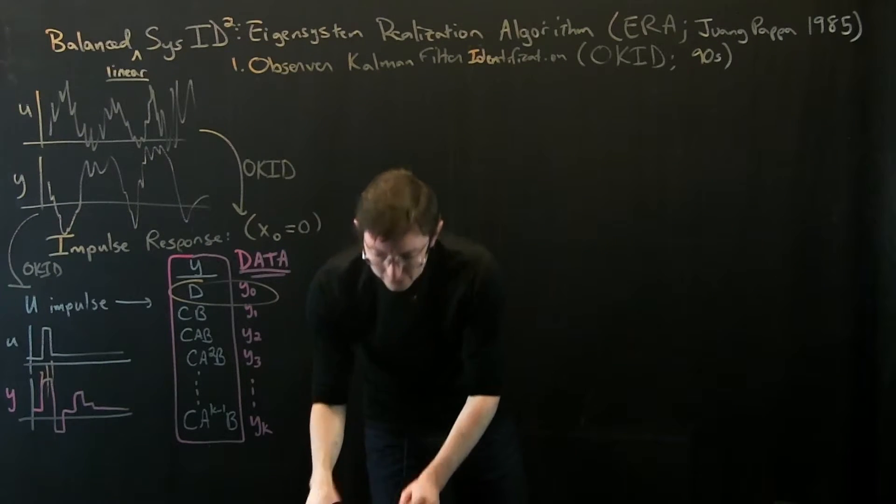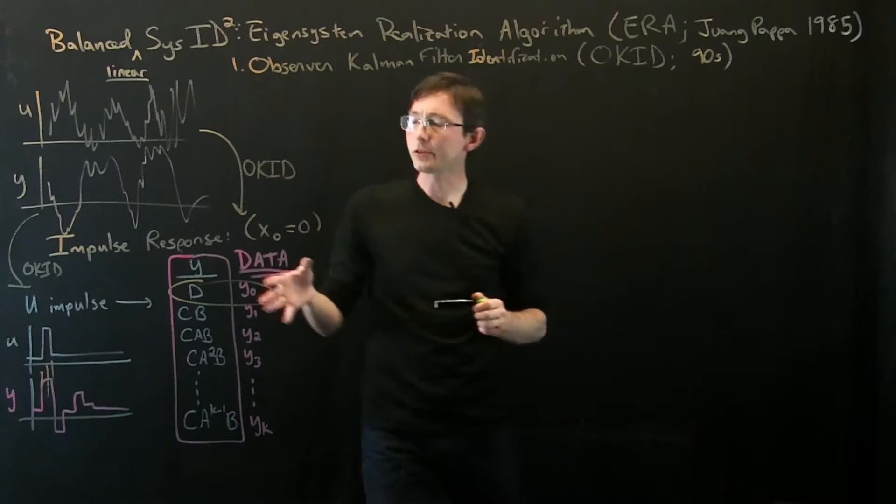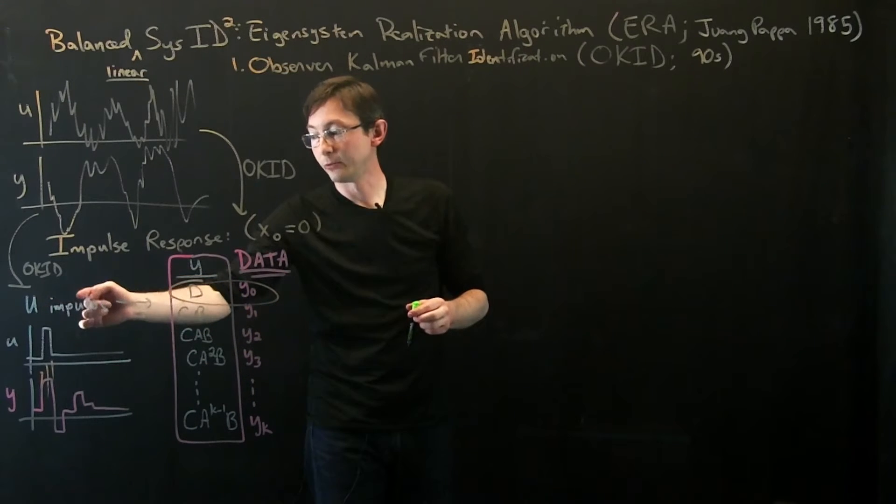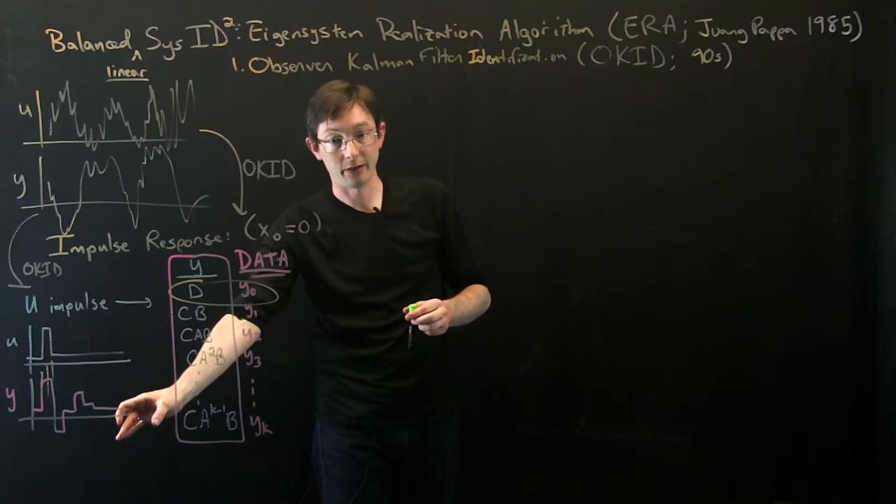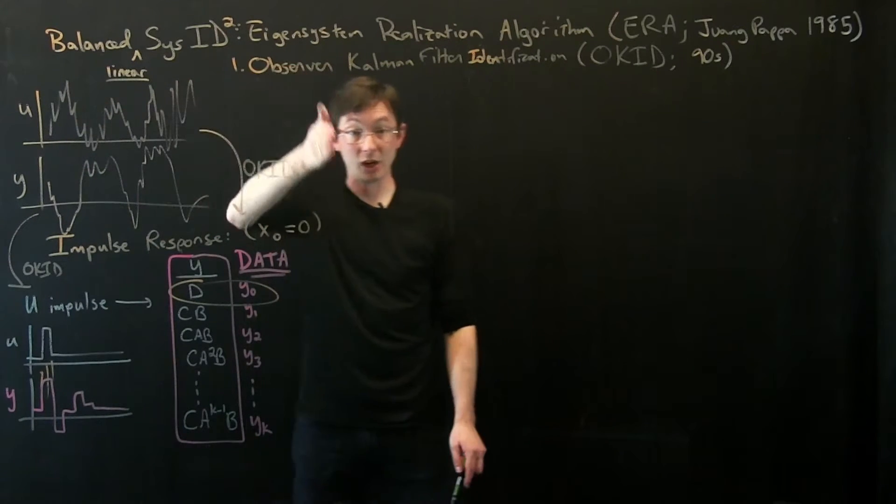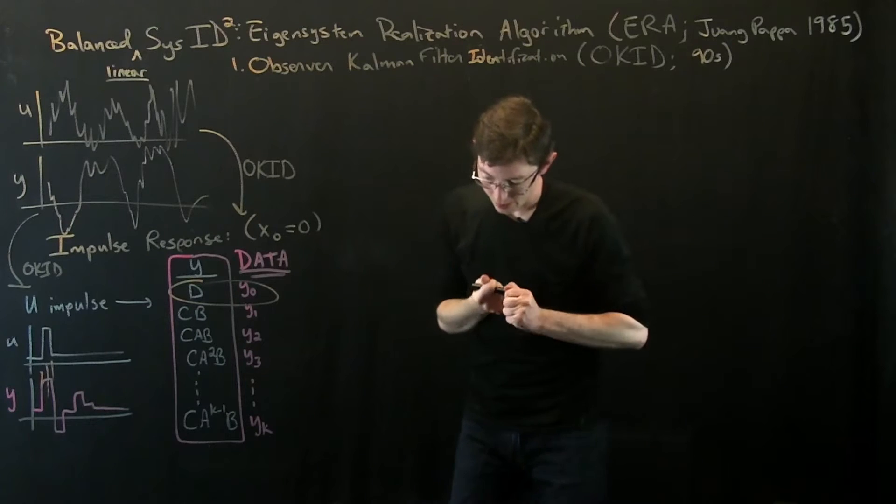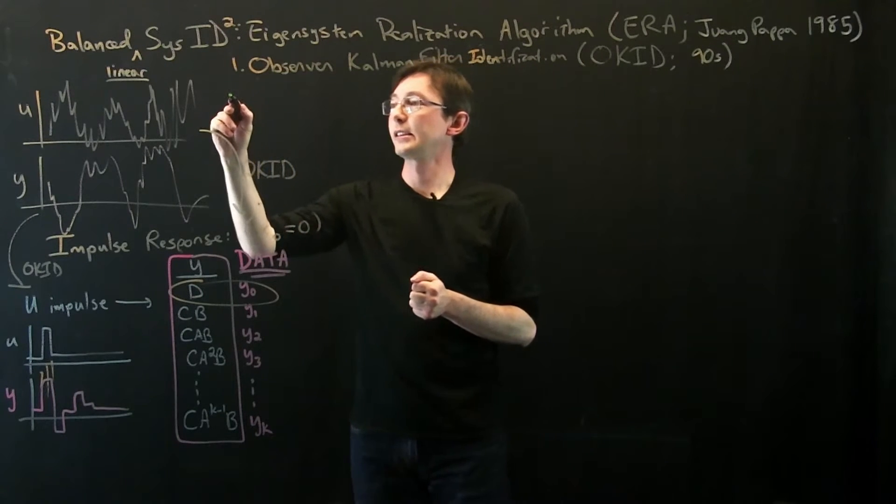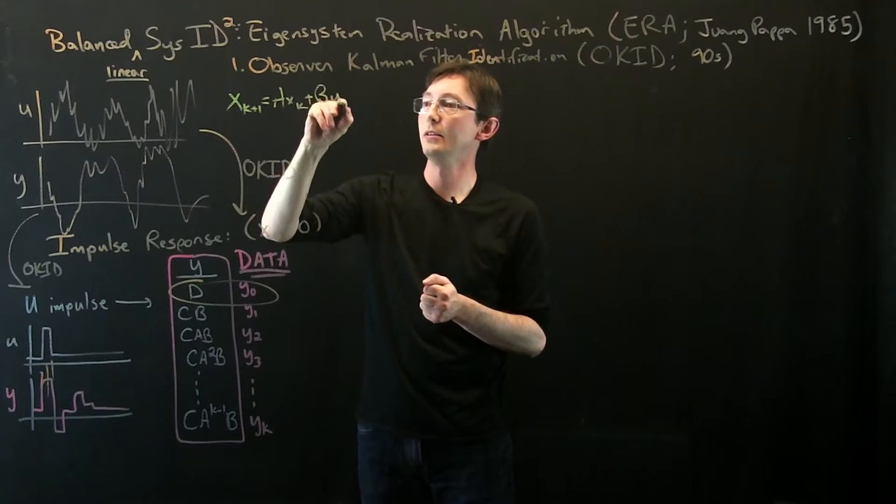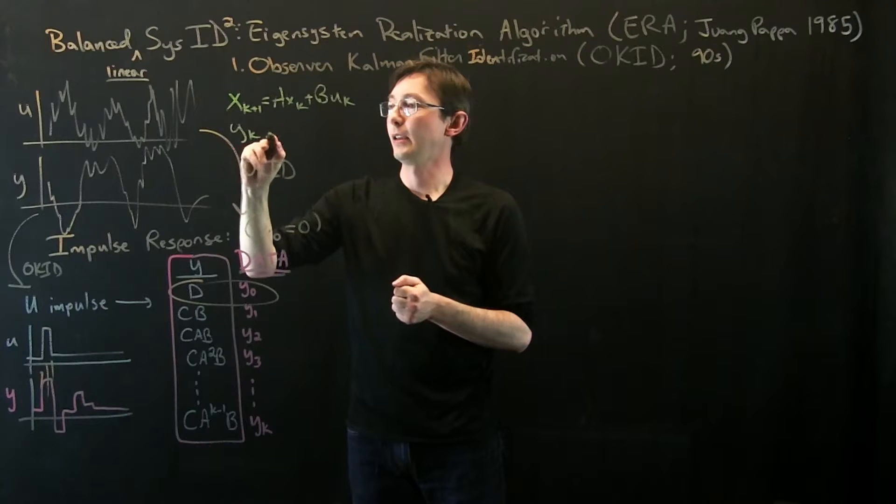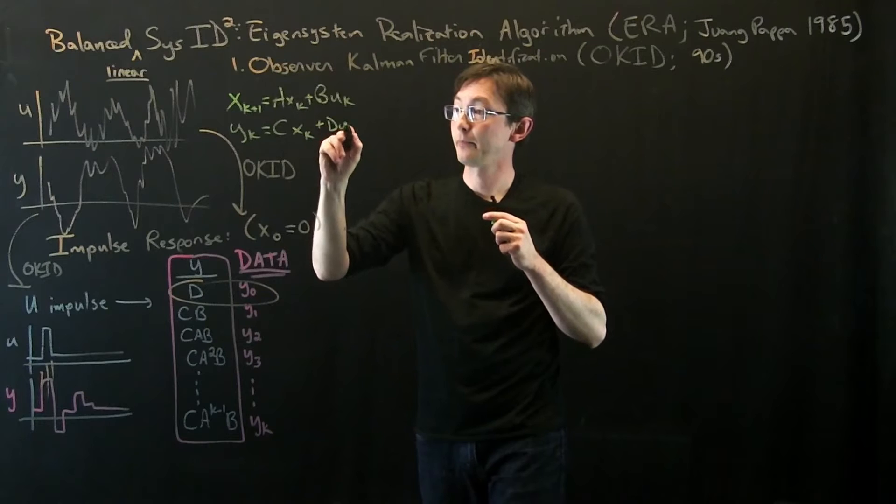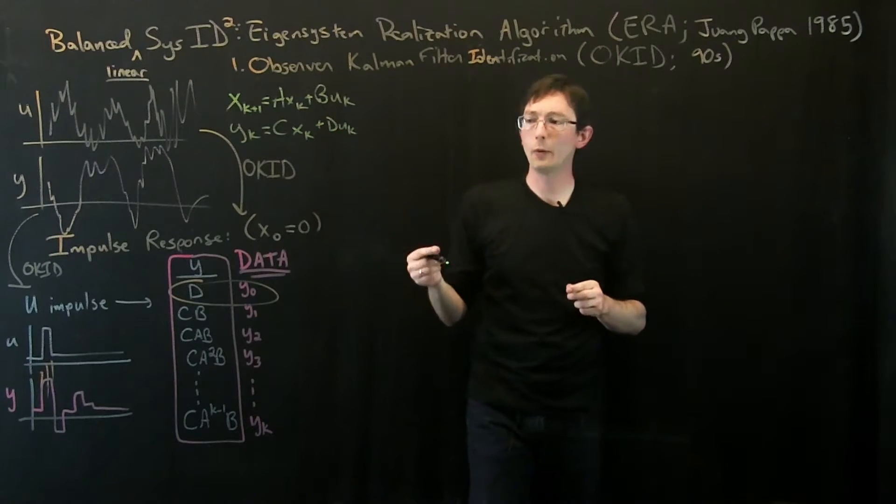So I'll do this in green. So remember how we did an impulse response to get these? I literally said u equals the identity and then it's zero at all other times and I get these values. That's what we're going to do here but now u is not simple, u is changing at every time step. So what I'm going to do, we're going to assume that there's a system x_{k+1} = A x_k + B u_k and y_k = C x_k + D u_k.